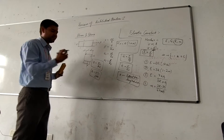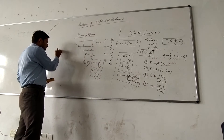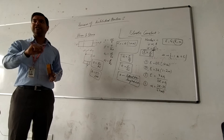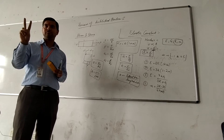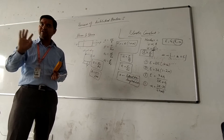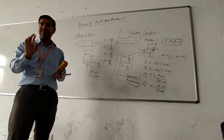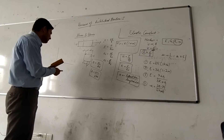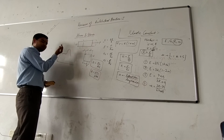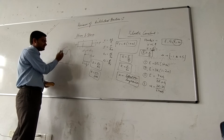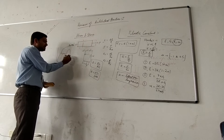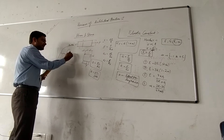Now, the stress-strain curve — the most important part. Why do we draw the stress-strain curve, and which type of material do we study? There are various types: the material may be ductile or brittle. We study the ductile material — we have plotted the curve for ductile material. The curve for brittle material looks different. We use ductile material in strength of materials because it has more ductility, making it suitable for construction purposes.